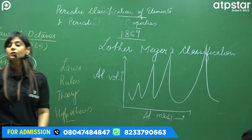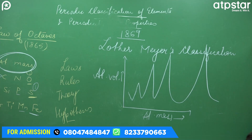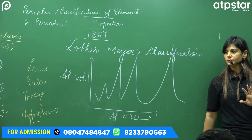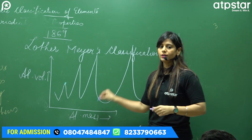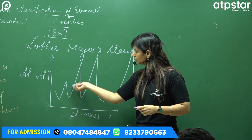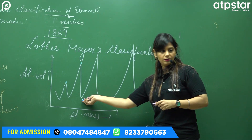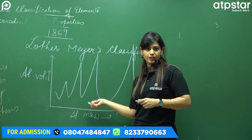When they made this graph, certain points are important. They said that elements with similar properties will appear at the same position in their graph. You have to learn four positions: peak, ascending portion, minimum (trough), and descending portion.